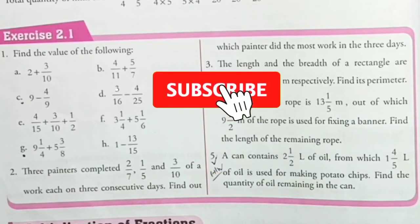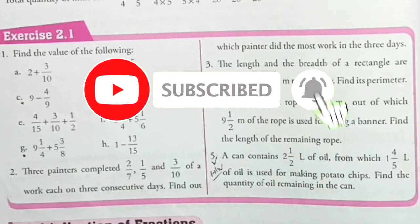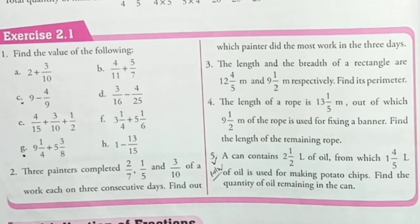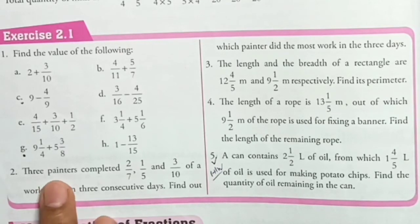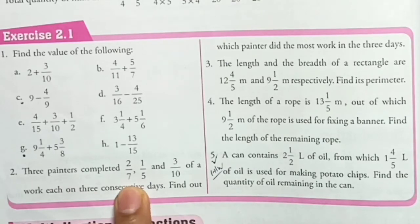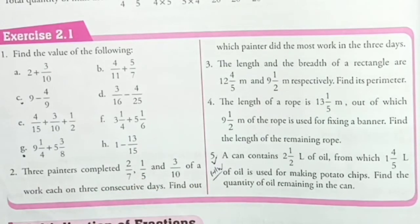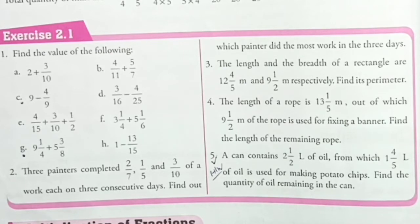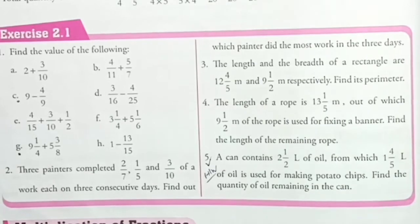Question number two: Three painters completed 2/7, 1/5, and 3/10 of a work each on three consecutive days. Find out which painter did the most work in the three days.